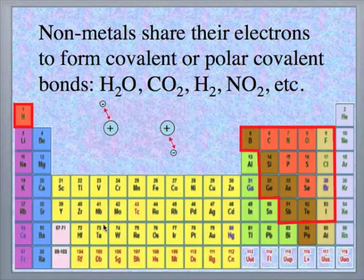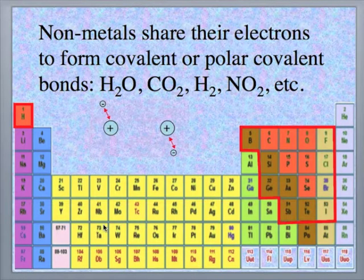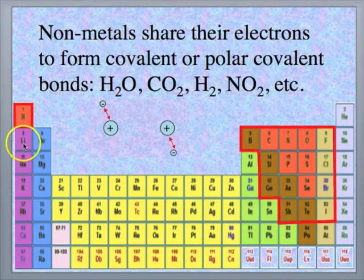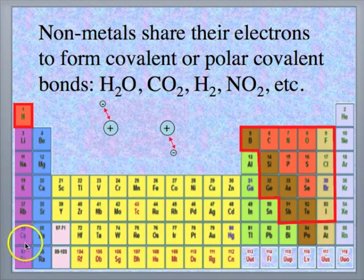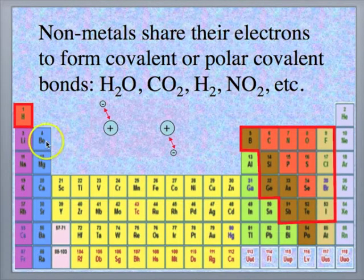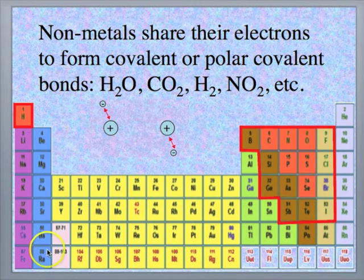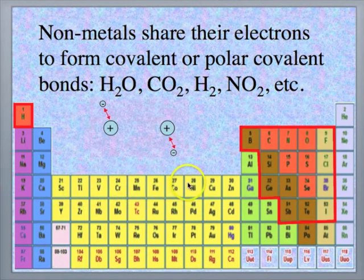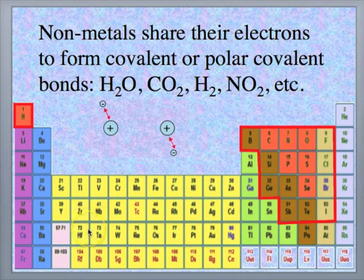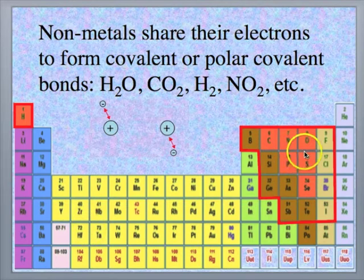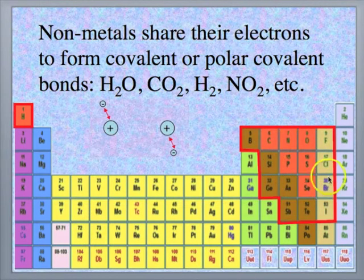We're going to talk about Chapter 3, Molecules, Compounds, and Balancing Equations. On the far right of the periodic table, we have the alkali metals, and the alkaline earths are in the second column. Then we have the transition metals stretching across, and as we get to the right side of the periodic table, we have the non-metals.